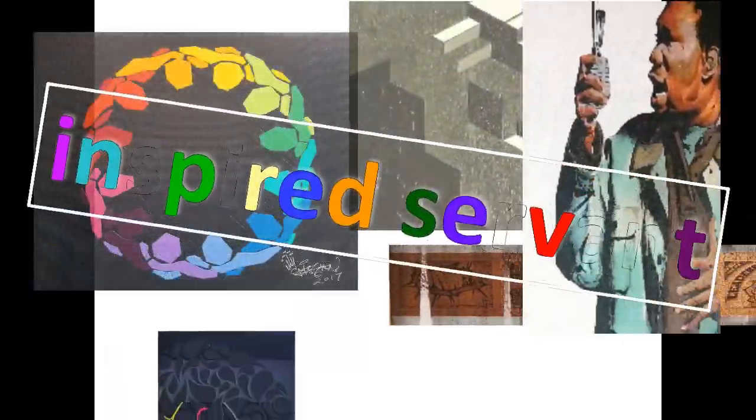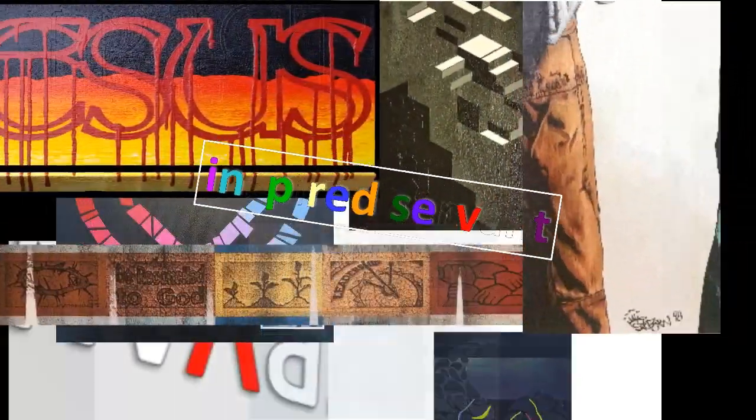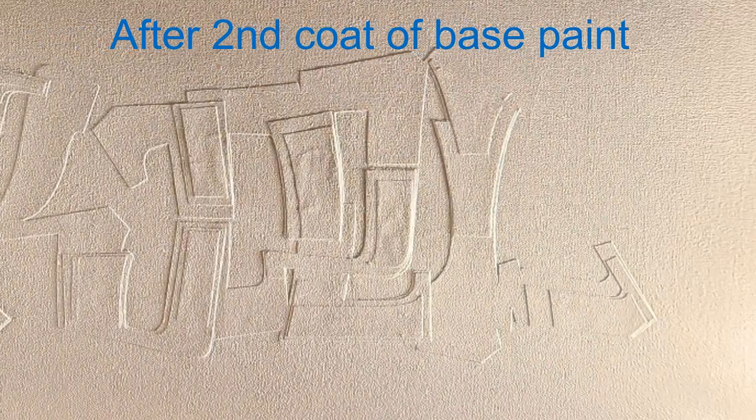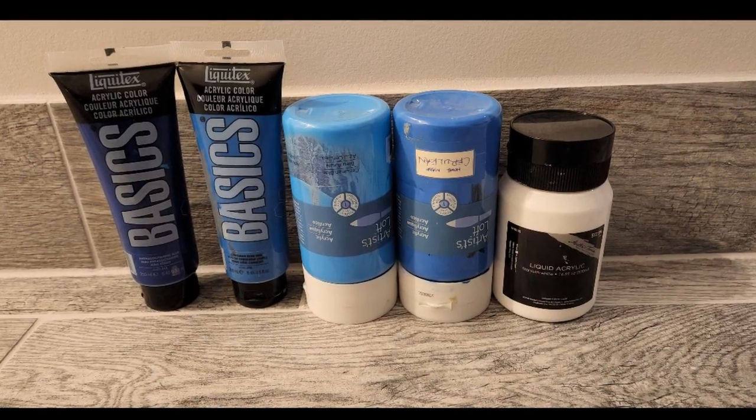This video is a demonstration of putting down the first layer of color on top of the artwork. We've already put down two layers of base coat that was white and we are now choosing a color scheme for the first layer of colors.